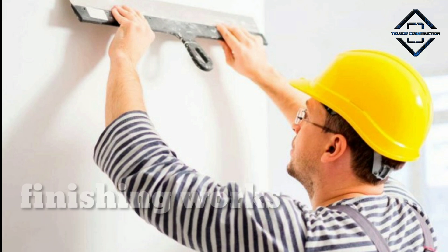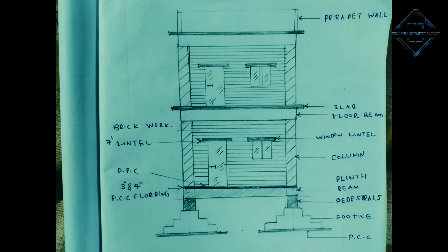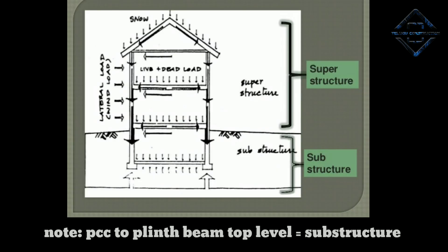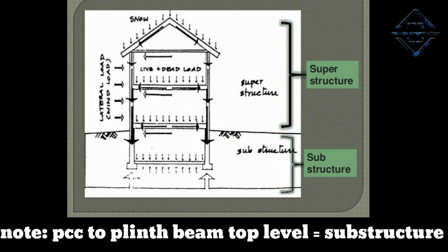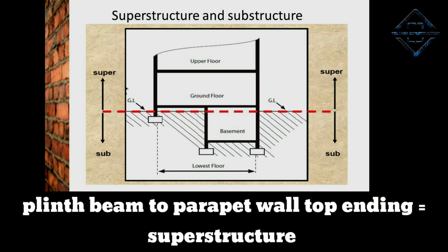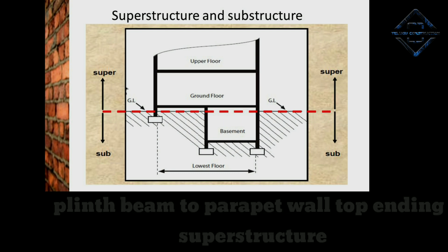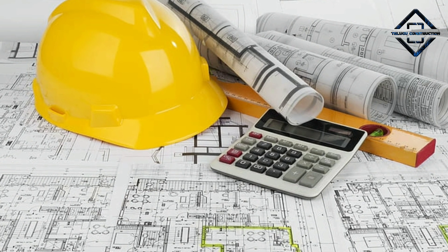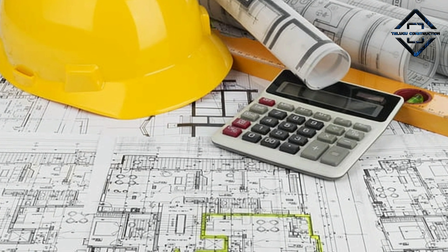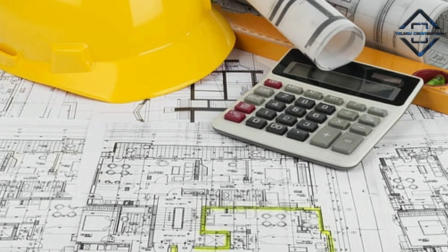This is the total process. This is the top floor — the same columns, beams, and slabs. This will continue. You can tell the substructure. The image will be the top floor. Thank you.